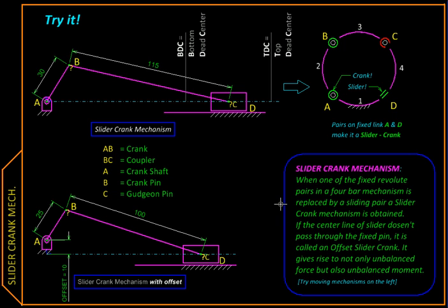We have seen what a slider crank is. It is essentially four links connected using three revolute pairs and a sliding or prismatic pair. Now we are going to change its fixed link, so instead of fixing link 1, we'll be fixing link 2 like this.